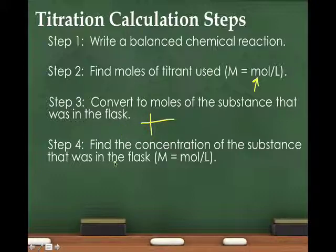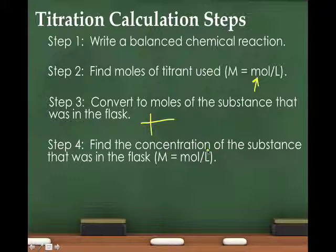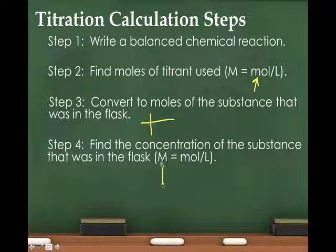Step four: take that answer — the moles of what's in the flask — and divide it by the volume in liters. You'll carefully measure how much acid went into the flask. Moles divided by liters gives molarity, and that's what we're trying to find with these titration calculations.